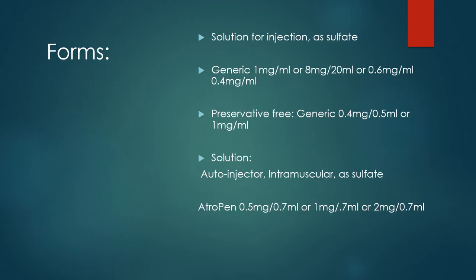Atropine is available as a solution for injection as the sulfate salt. The generic form comes at 1 mg/mL or 8 mg per 20 mL or 0.6 mg/mL or 0.4 mg/mL. Preservative-free types are available as 0.4 mg per 0.5 mL or 1 mg/mL. It also comes as an auto-injector solution given intramuscularly as the sulfate at 0.5 mg per 0.7 mL, 1 mg per 0.7 mL, or 2 mg per 0.7 mL.